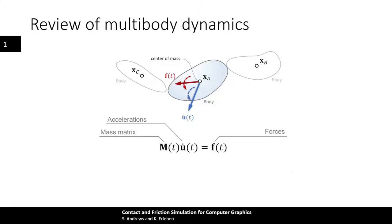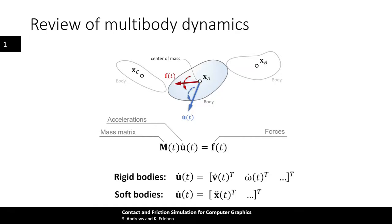For rigid bodies, the vector u-dot represents the generalized accelerations of the bodies, containing both linear and angular quantities. Similarly, there will be linear forces and torques acting on the bodies. Whereas for soft bodies, the u-dot vector typically just contains the linear accelerations of the nodal coordinates—for instance, the accelerations of the vertices of a tetrahedral mesh.